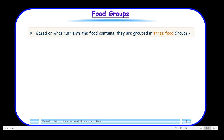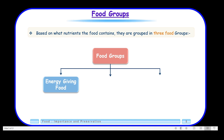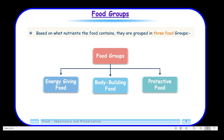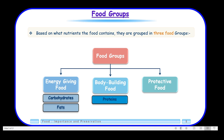You should know that these food items are divided into different groups, as they have different functions to perform in our body. Based on what nutrients the food contains, they are grouped into three food groups. First is energy-giving food. Then we have body-building food, which helps us grow tall. And then there are protective foods, which save us from various diseases. Carbohydrates and fats fall in the category of energy-giving food, whereas proteins fall in body-building foods, and vitamins and minerals are in the category of protective foods.